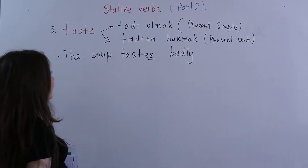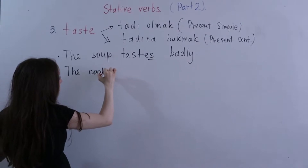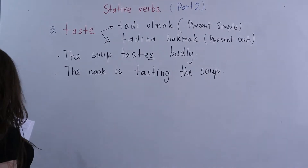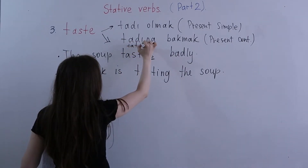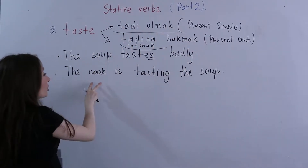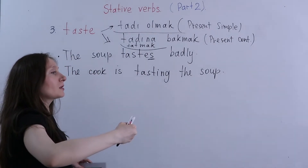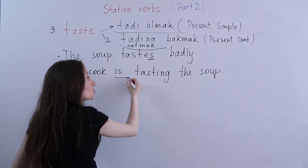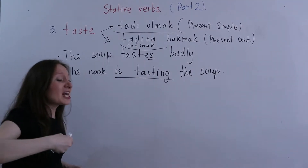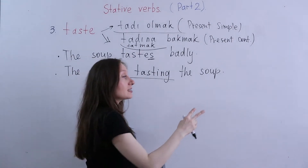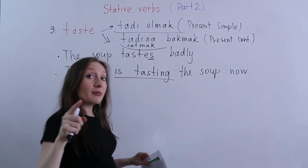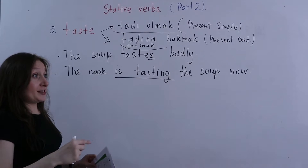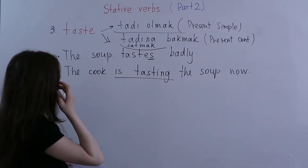The second meaning of 'taste' is 'to taste something' — tadına bakmak — and in this case we use present continuous. For example: 'The cook is tasting the soup.' You can understand from the meaning — soup cannot perform the action of tasting, but the cook can. If it is the action of tasting happening now, use present continuous.